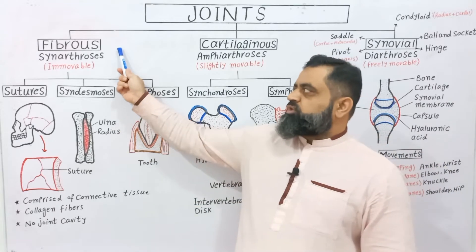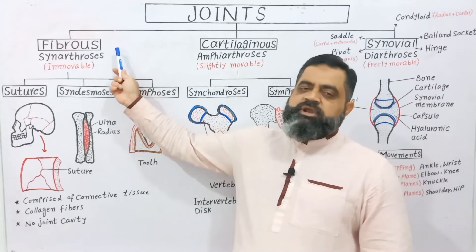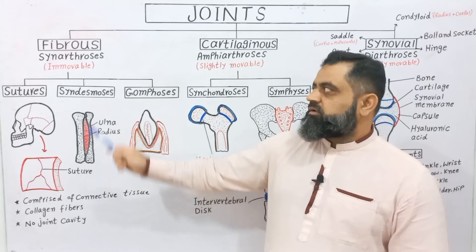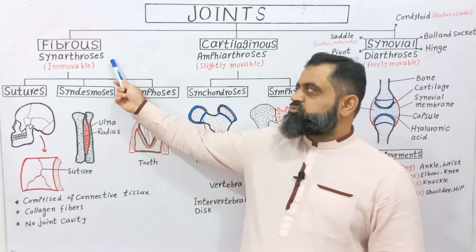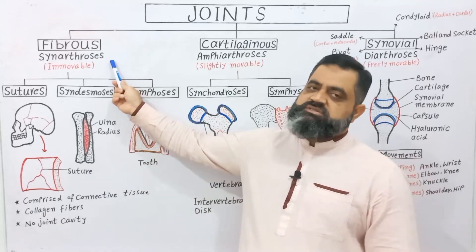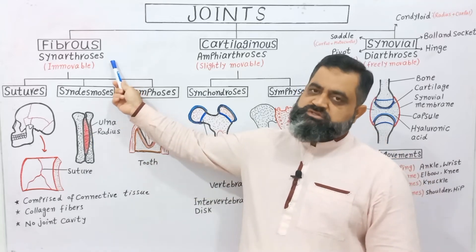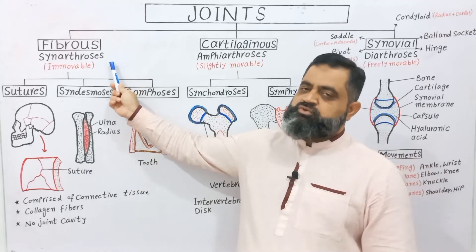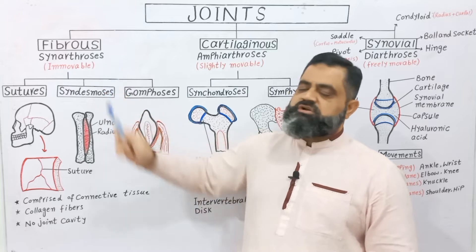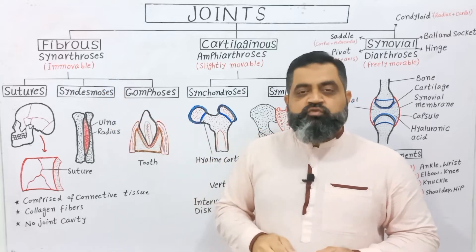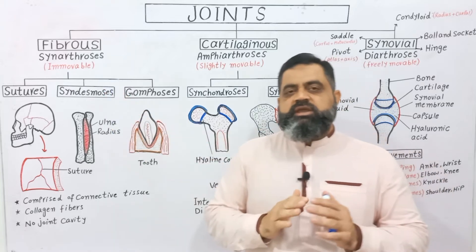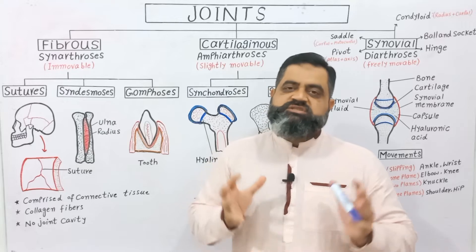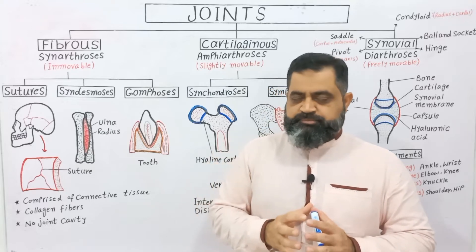Fibrous joints are made up of fibrous connective tissue and are also known as synarthrosis. Synarthrosis are those joints which are immovable — they cannot show any kind of movement once they are formed.